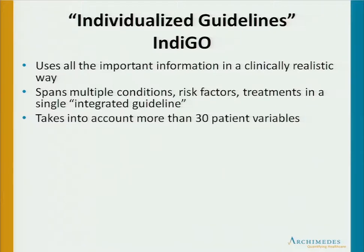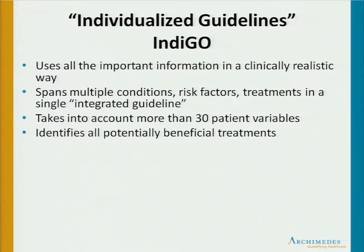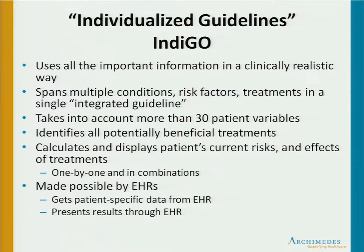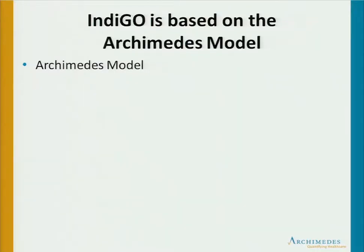The Indigo application we've developed takes into account about 30 patient variables — virtually the same list that every physician would identify as important in a decision like this. Indigo identifies all the potentially beneficial treatments for a particular patient given their variable information, then calculates and displays the patient's current risks and the effects of each potential treatment, both one by one and in any possible combination. This is all made possible by electronic health records — we receive information from the EHR and present it back to the physician and patient through the EHR.